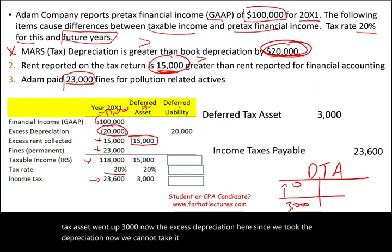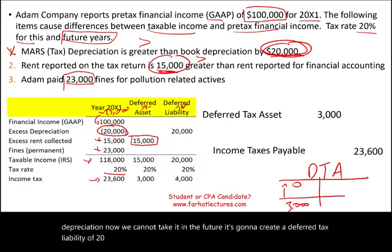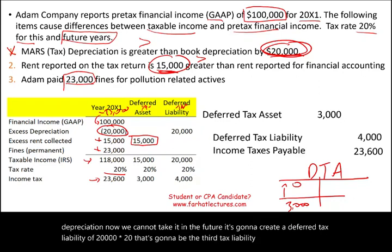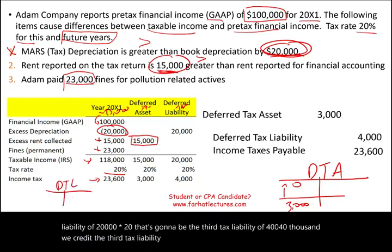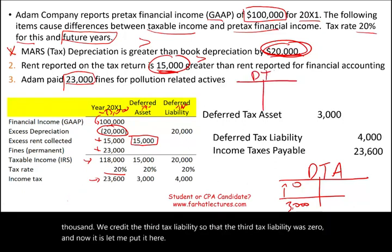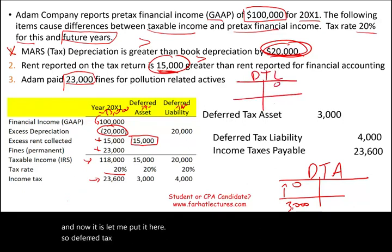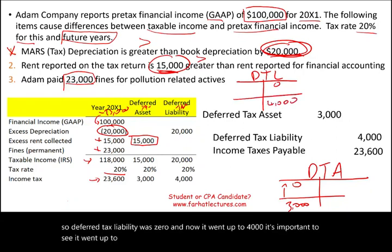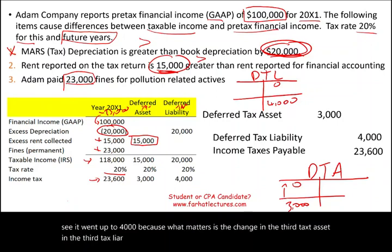The excess depreciation of $20,000 was taken for tax now but cannot be taken in the future, creating a deferred tax liability. $20,000 × 20% = $4,000 deferred tax liability. The prior balance was zero, so the deferred tax liability increases by $4,000. The change in these balances is what matters for the journal entry.